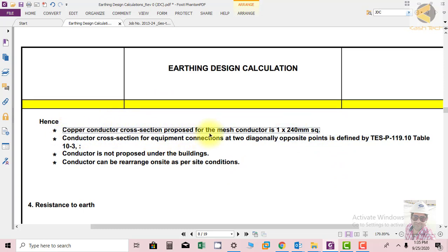Hence after getting these calculations we came to know that copper conductor cross section proposed for the mesh is 1 by 240 square mm. We have chosen this conductor. This is the cross section area of the conductor. Conductor cross section for equipment connections at two diagonally opposite points is defined by TESP table 10-3.